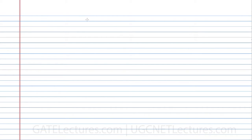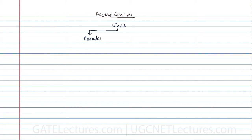Let's discuss access control. The topic name is access control. Now, assuming that we have links of two types: number one is the broadcast link, and second one is the point-to-point channel.